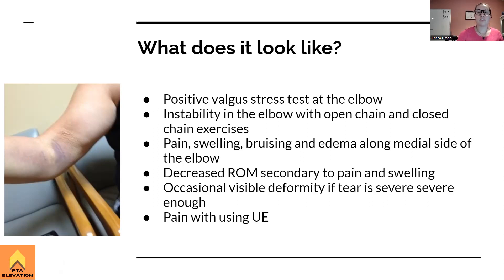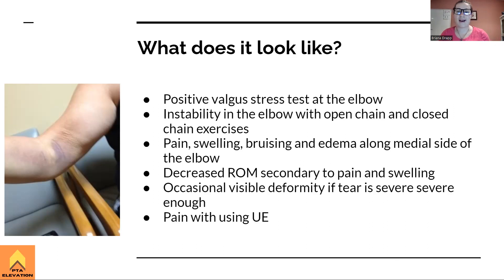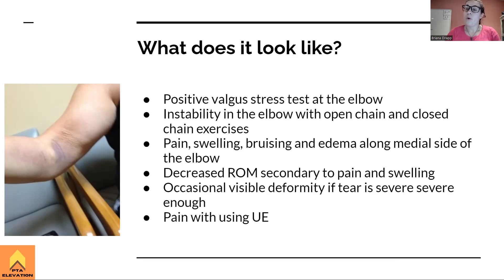The valgus stress test at the elbow is performed similarly to the MCL test at the knee — you push the elbow in medially and assess for any looseness, clunking, or instability. You're looking for gross instability at the elbow joint in both open and closed chain exercises. Open chain would be like a bicep curl; closed chain would be a pushup. The UCL is responsible for holding the ulna to the humerus, so instability is a key finding.